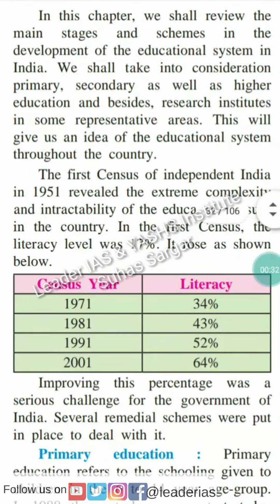In this chapter, we shall review the main stages and the scheme in the development of the educational system in India. We shall take into consideration primary, secondary as well as the higher education, and research institutes in some representative areas. This will give us an idea of the educational system throughout the country. The first census of independent India in 1951 revealed the extreme complexity and intractability of the educational issues in the country. In the first census, the literacy level was 17%. It rose as shown below.